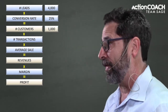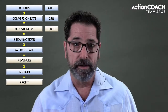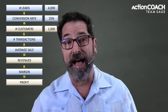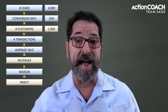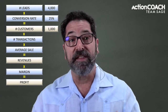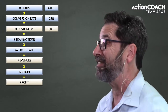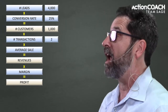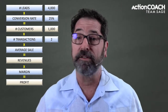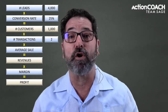The next number we need to understand is the number of transactions — how often does that customer come back to buy from you again? In my mythical business, let's say that number is two. Some customers might come once, some might come dozens of times, but the average works out to two.